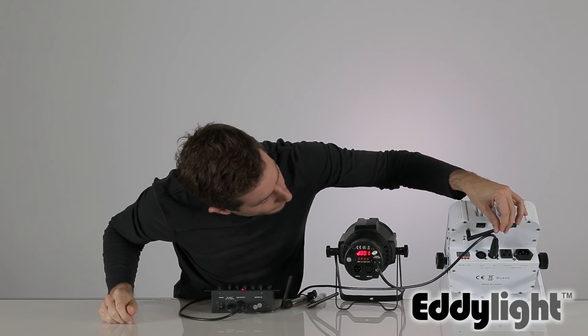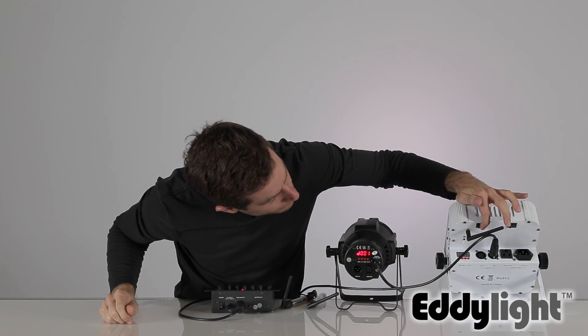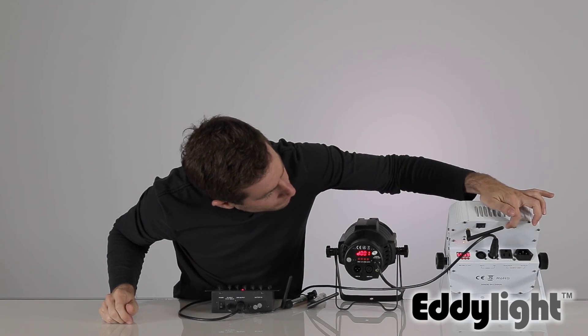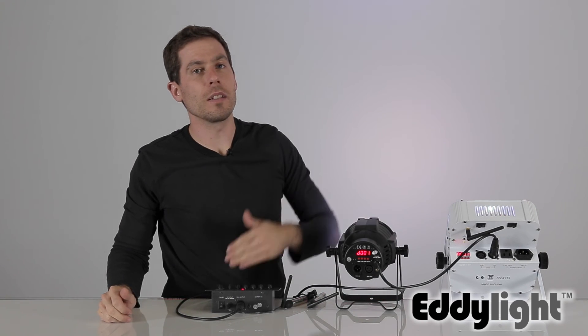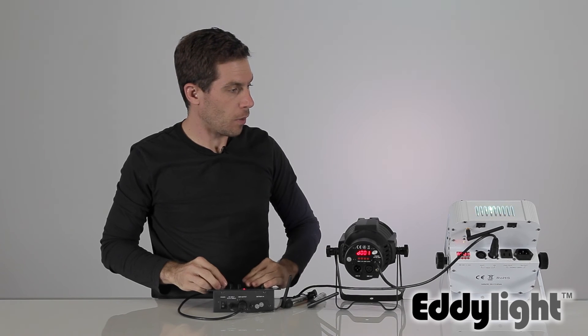When we turn on our light, and it comes into address mode, the light will immediately connect to the DMX board, because it's already there.